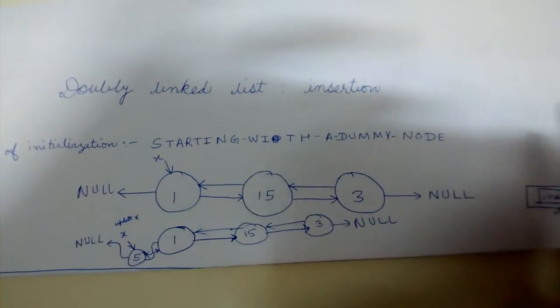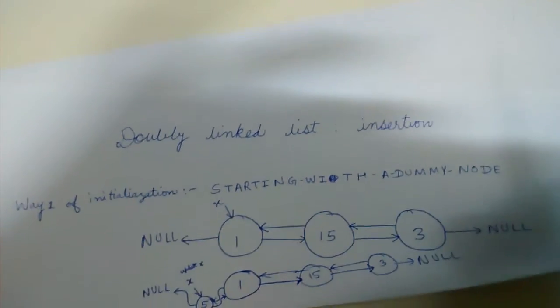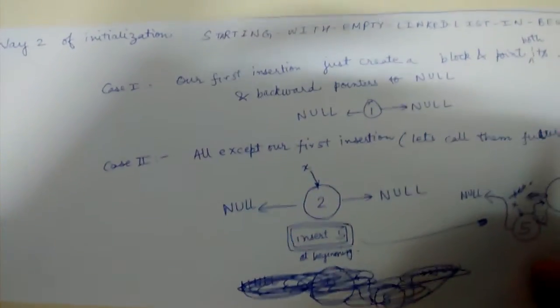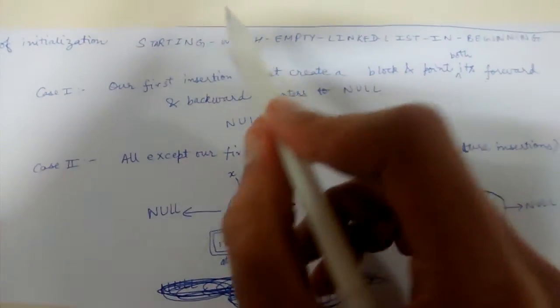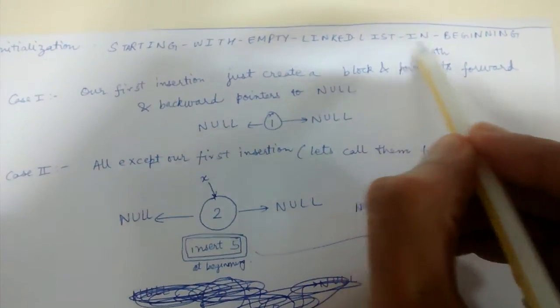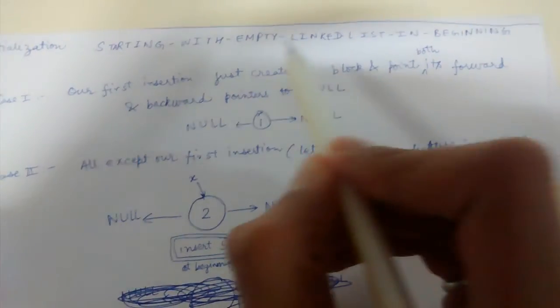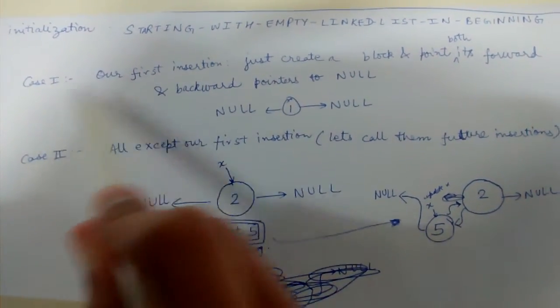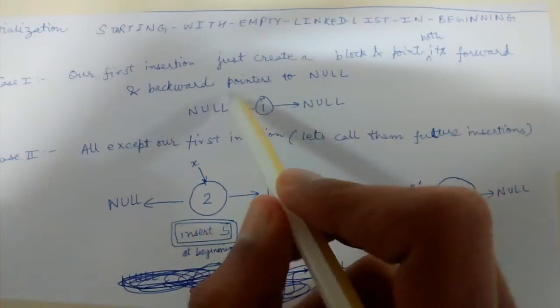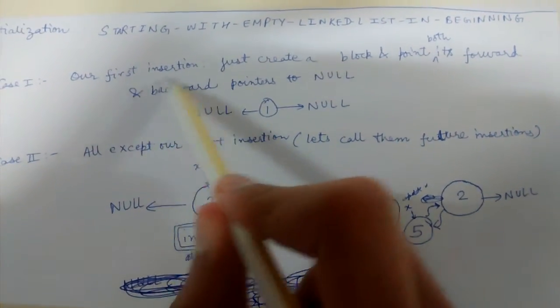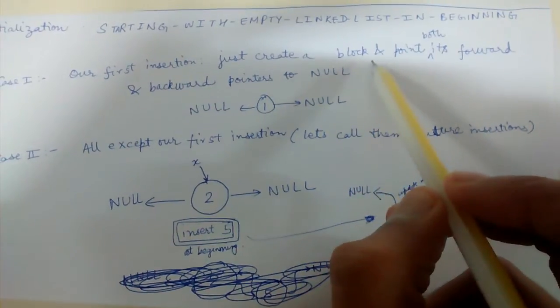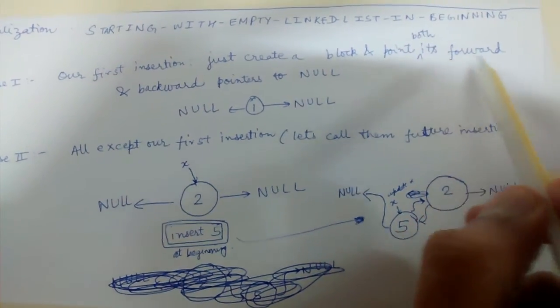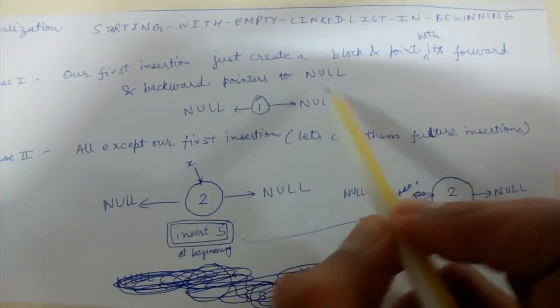Now let's see another way of initialization, that is starting with empty linked list in the beginning, with no dummy node. So case one is our first insertion. What we need to do during our first insertion is just create a block and point both its forward and backward pointers to null.